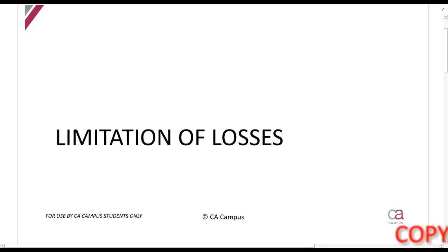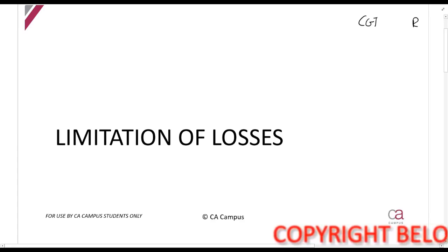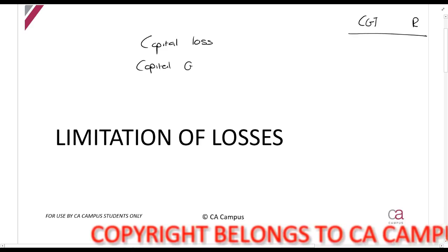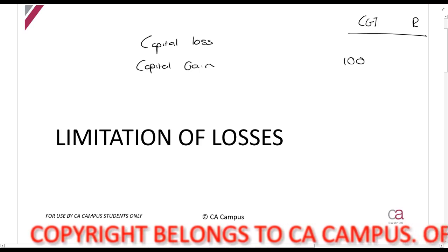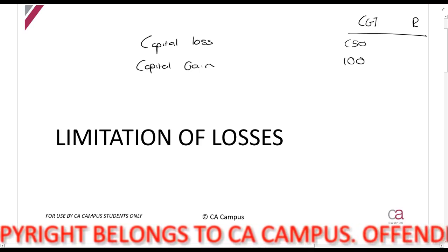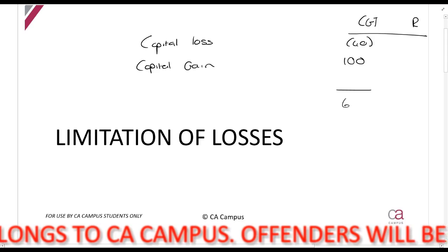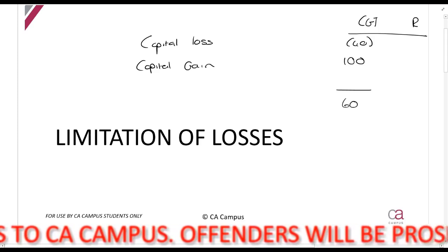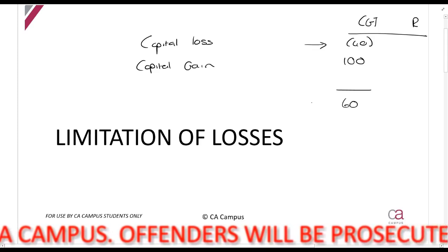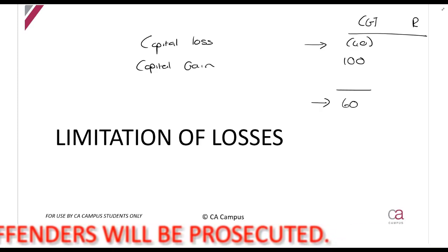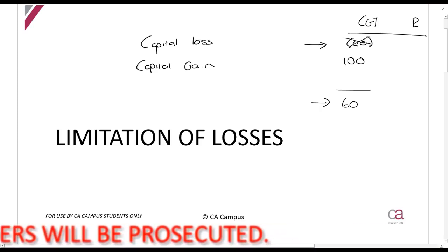We're now going to talk about limitation of losses. When we are doing our tax calculations, if you calculate a capital loss — say a capital gain is 100 rands and your capital loss is 40 rands — then your aggregate capital gain is going to be 60 rands. So this capital loss reduces your CGT calculation, which means it's a benefit for you. The limitation of losses section covers situations where they will not allow you to claim that loss for some reason.